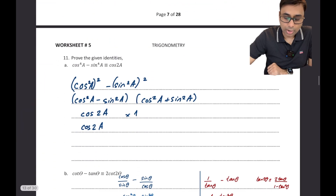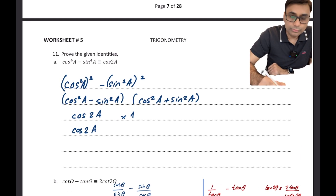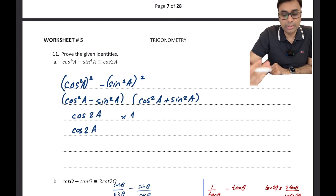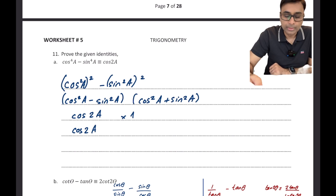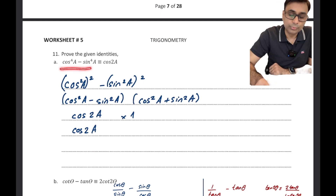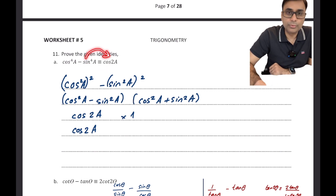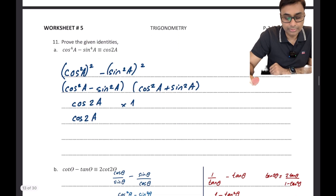It's always advisable to start from the side that is more complicated or has more tendency to be simplified. Like in this case, I can do more simplifications starting from the more complex side — bringing this into that form would be easier. So I started with cos⁴a - sin⁴a and wrote cos⁴a as (cos²a)² and sin⁴a as (sin²a)².